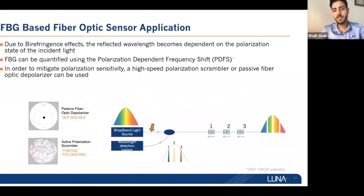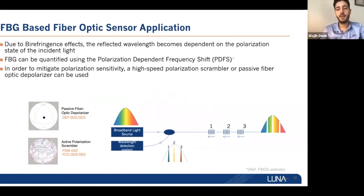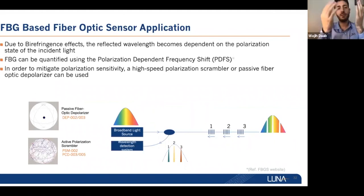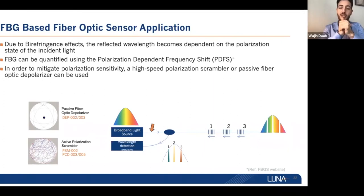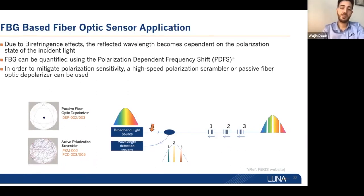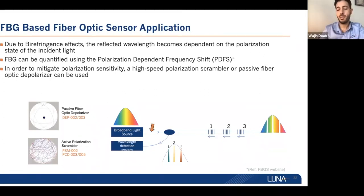For fiber optic sensing applications, specifically FBG-based sensing, the sensor can be polarization sensitive. Customers can qualify FBG sensors using the term polarization-dependent frequency shift, because the reflected signal's frequency and wavelength are highly dependent on the input state of polarization. Customers may use fiber optic depolarizers to completely depolarize the signal, or active polarization scrambling to average out the polarization sensitivity.